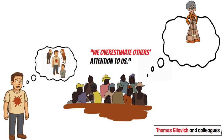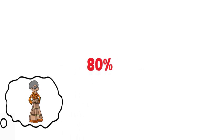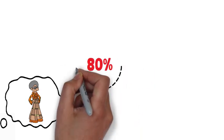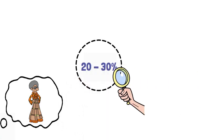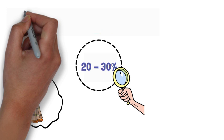Think of it like wearing a ridiculous Barry Manilow t-shirt to class. You swear 80% of the room will mock it, but observers guess only 20-30% even register it. This illusion amps up anxiety but is surprisingly common.